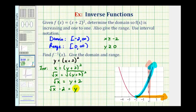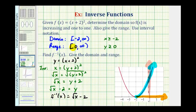We'll go ahead and replace y with f inverse of x. So f inverse of x is equal to the square root of x minus two. We're also asked to give the domain and range. Because this is the inverse of function f, the domain of f is going to be the range of f inverse, and the range of f will be the domain of f inverse. So the domain of f inverse will be from zero to infinity, closed on zero, and the range will be the interval from negative two to infinity.